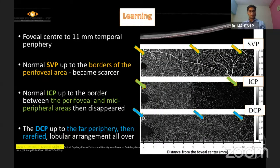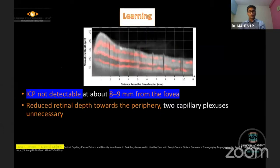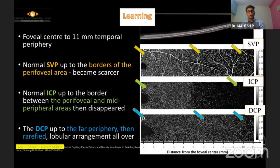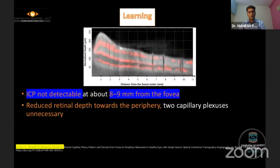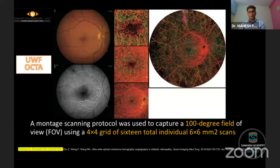Regarding implications: the superficial capillary plexus is normal to the border of the fovea and becomes scarcer towards the periphery. The intermediate capillary plexus is normal till the edge of the fovea and completely absent beyond that. The deeper capillary plexus is near normal. The intermediate capillary plexus is not detectable beyond 8mm — theoretically because the retina is thinner at that point.